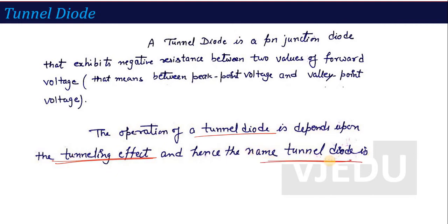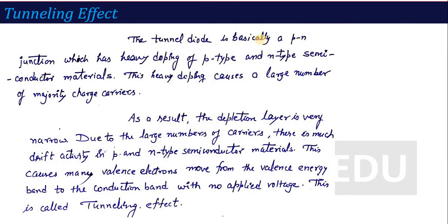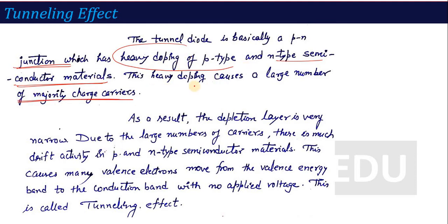The tunnel diode is basically a PN junction diode which has heavily doped P-type and N-type semiconductor material. In doping, we add impurities to form a P-type and N-type semiconductor. The same thing as in Zener — P and N type are heavily doped. Due to this heavy doping, there are a large number of majority charge carriers — holes in the case of P-type, electrons in the case of N-type.